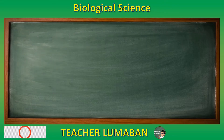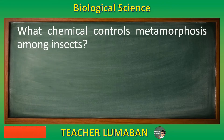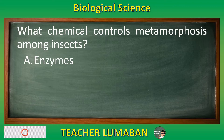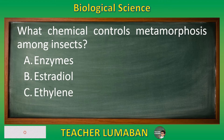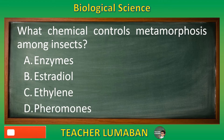What chemical controls metamorphosis among insects? Letter A: Enzymes. Letter B: Estradiol. Letter C: Ethylene. Letter D: Pheromones.